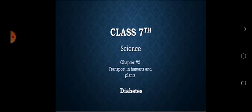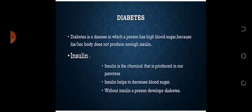Diabetes is a disease in which a person has high blood sugar because his or her body does not produce enough insulin. Diabetes ایسی بیماری ہے جس میں patient کا sugar level high ہو جاتا ہے، اور ایسا اس لیے ہوتا ہے کیونکہ ان کی body کے اندر insulin نہیں بن پاتی، اس وجہ سے انہیں diabetes ہو جاتی ہے۔